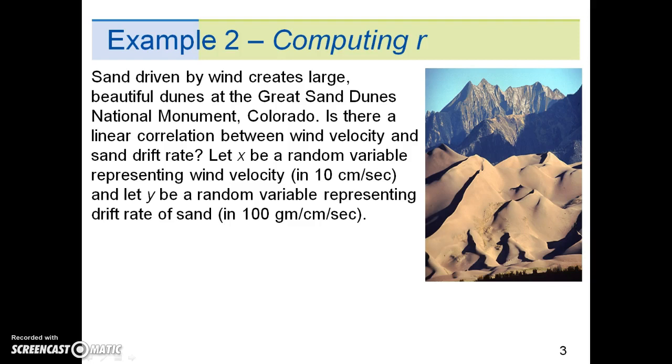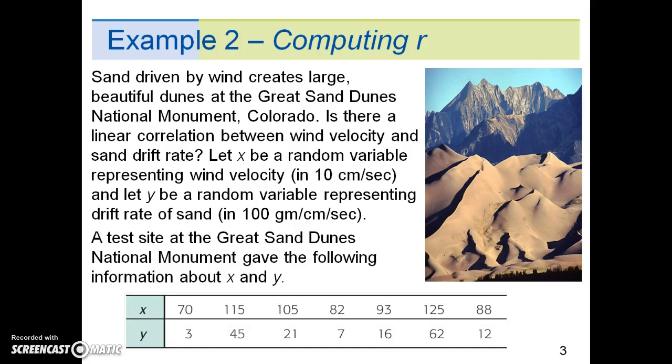Our first example is given here. Sand driven by wind creates large beautiful dunes at the Great Sand Dunes National Monument, Colorado. Is there a linear correlation between wind velocity and sand drift rate? Let x be a random variable representing wind velocity in cm per second and let y be a random variable representing drift rate of sand in grams per cm per second. A test site at the Great Sand Dunes National Monument gave the following information about x and y.